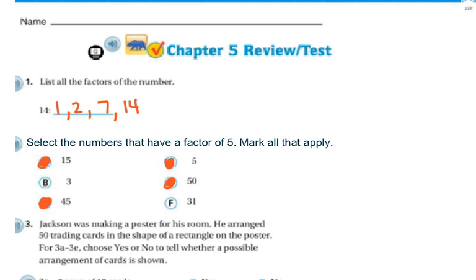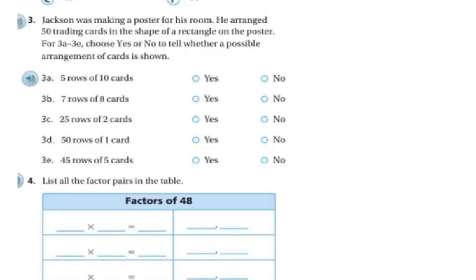Next it says, Jackson was making a poster for his room. He arranged 50 trading cards in the shape of a rectangle on the poster. For 3A, 3B, 3C, choose yes or no to tell whether a possible arrangement of cards is shown. Well, I just think about my multiplication facts and my factors. So 5 rows of 10 cards. 5 times 10 is 50, and remember, we're looking to make it even for 50. So yes.